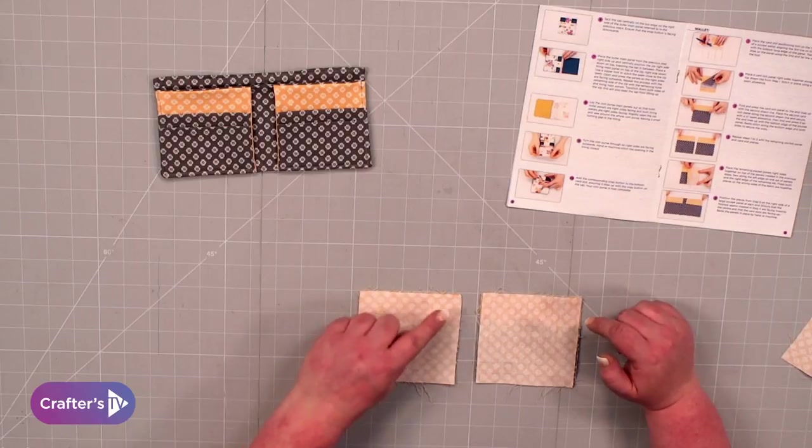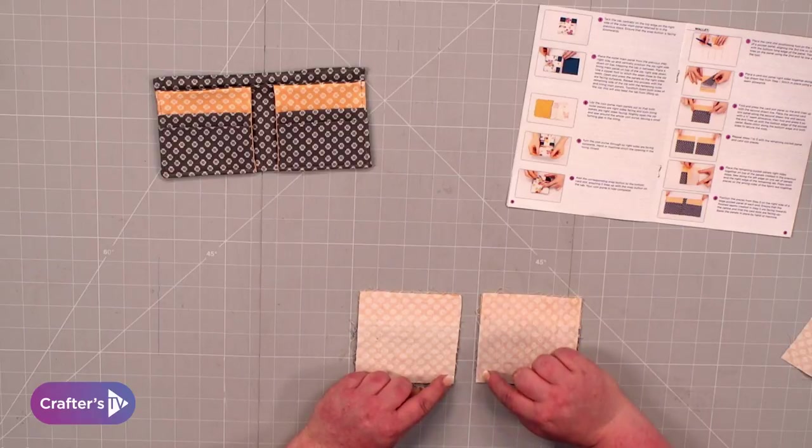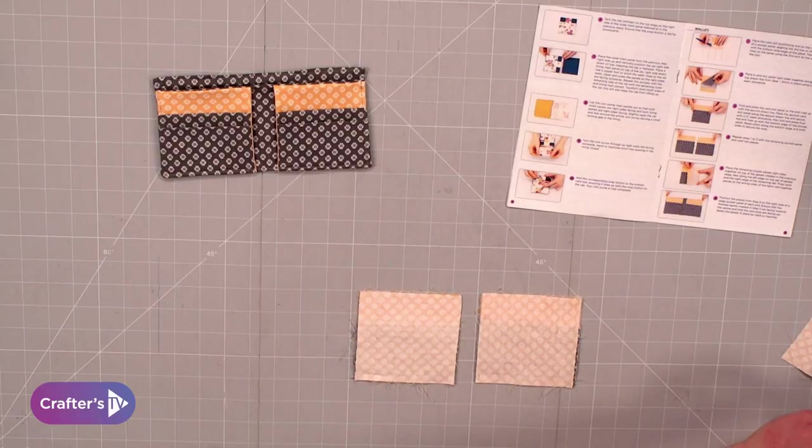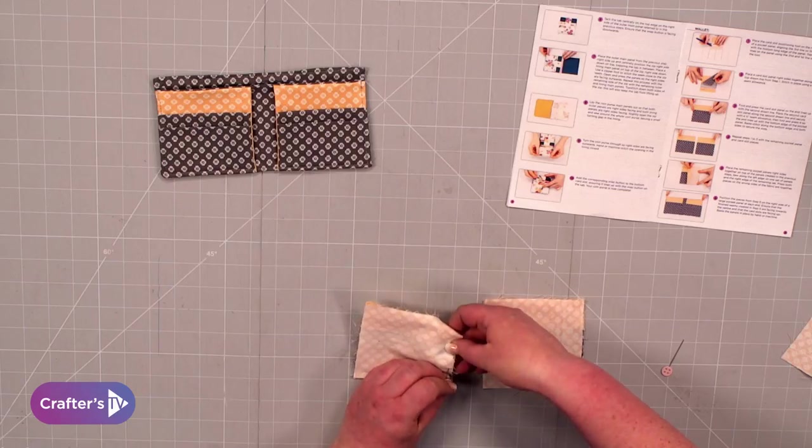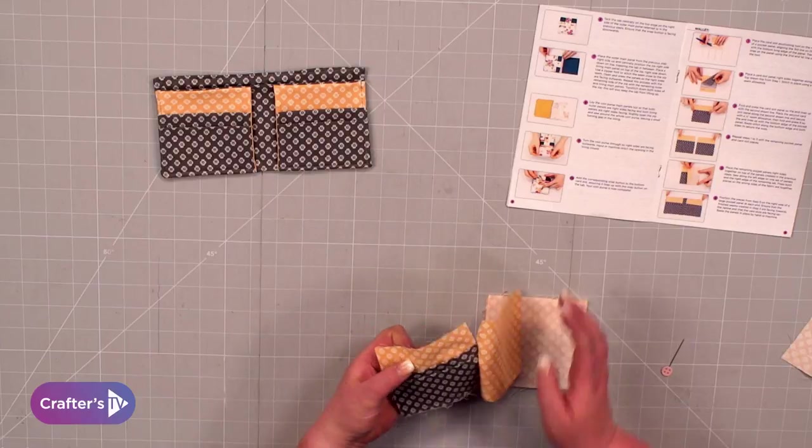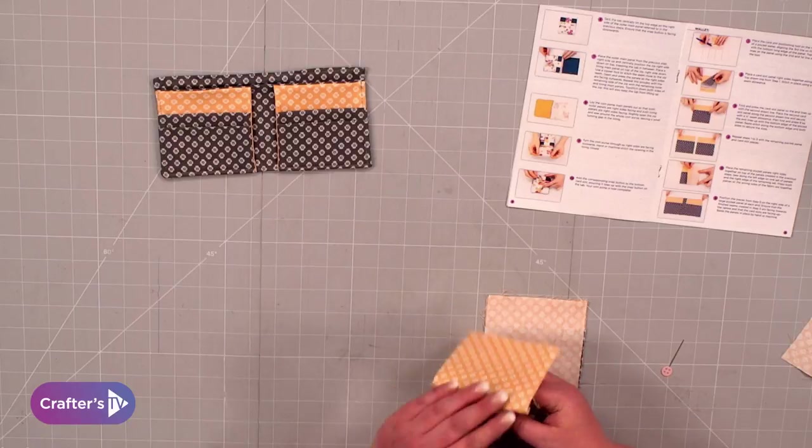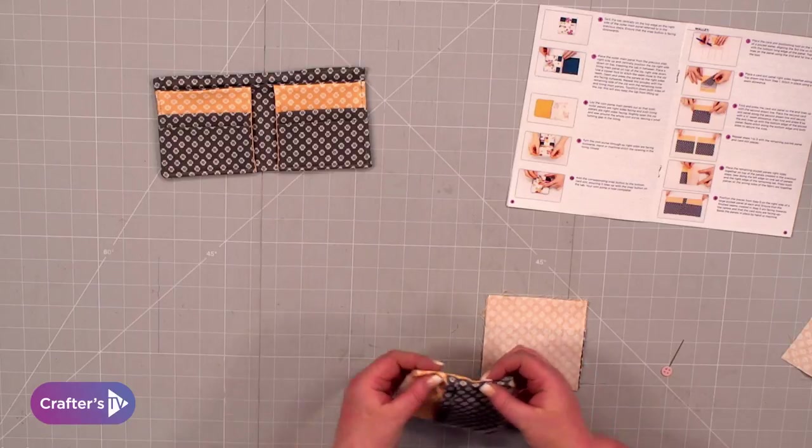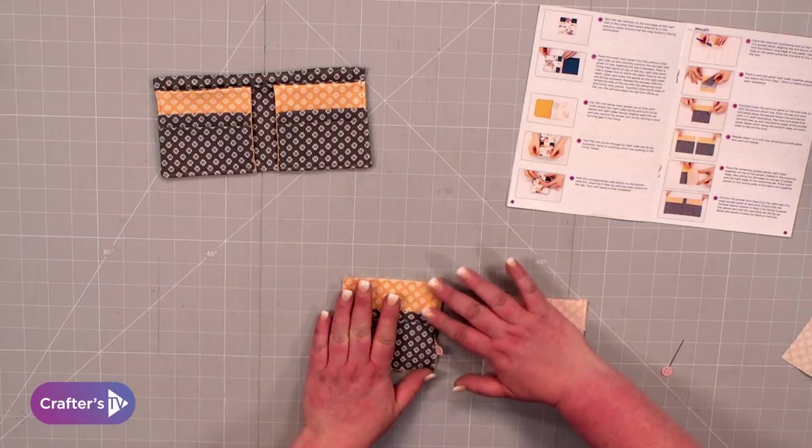Now we need to sew the side seam, but it tells you in the instructions that when you put them together, you want to sew one on the right hand side and one on the left hand side. We're going to pop a quick pin in there.